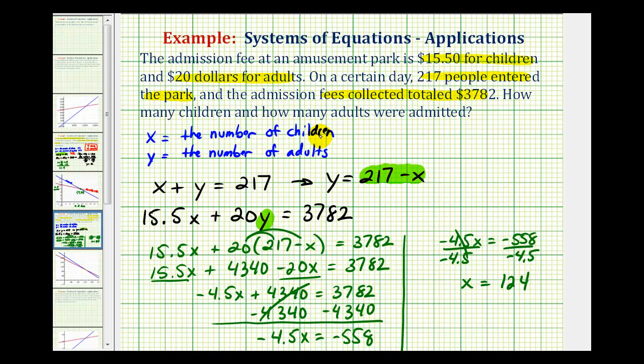Remember, x represents the number of children, so we still have to determine the value of y, which would be the number of adults. So we can use this equation here, x plus y equals 217, to determine y, or we can just use the equation y equals 217 minus x. If we use this equation, we know that y must be equal to 217 minus 124, which is equal to 93.